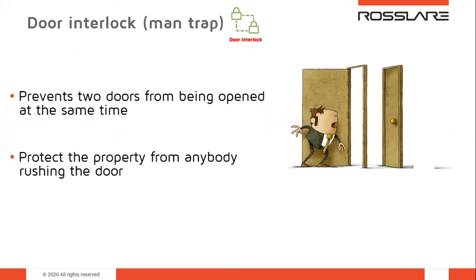The first feature is the door interlock, or mantrap. The door interlock prevents two doors from being open at the same time. You step in, the outside door closes, then you can enter the next door. We're seeing this more and more with businesses that want to protect their property and prevent anybody from rushing the door. We've implemented this frequently in dispensaries, pharmacies, jewelry stores, and any place with high-value materials to protect.